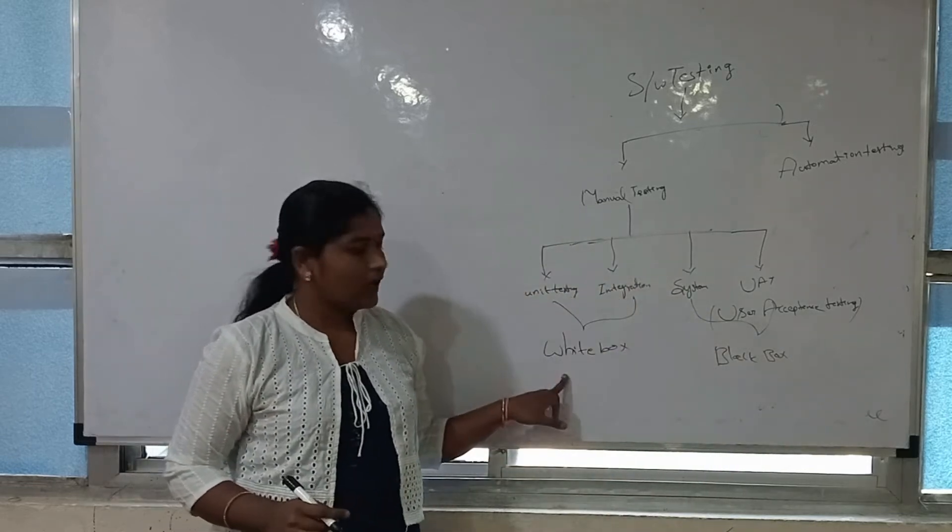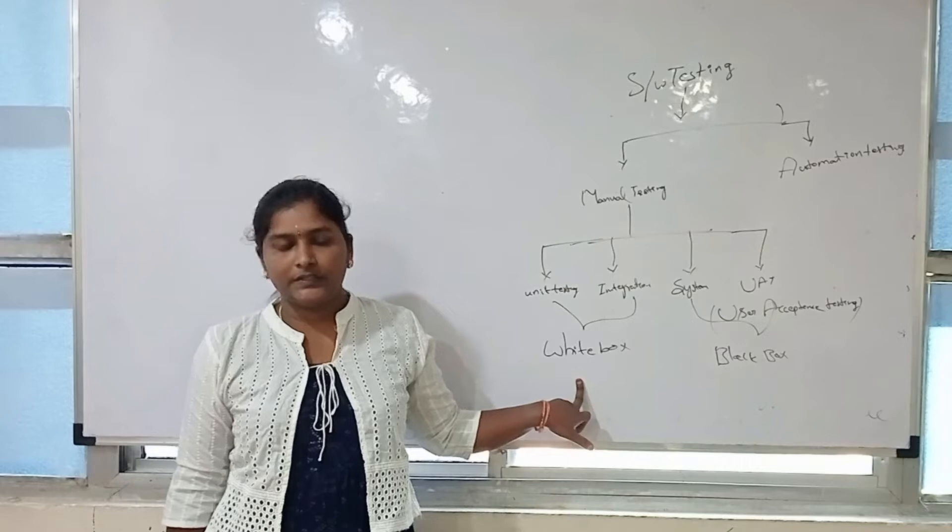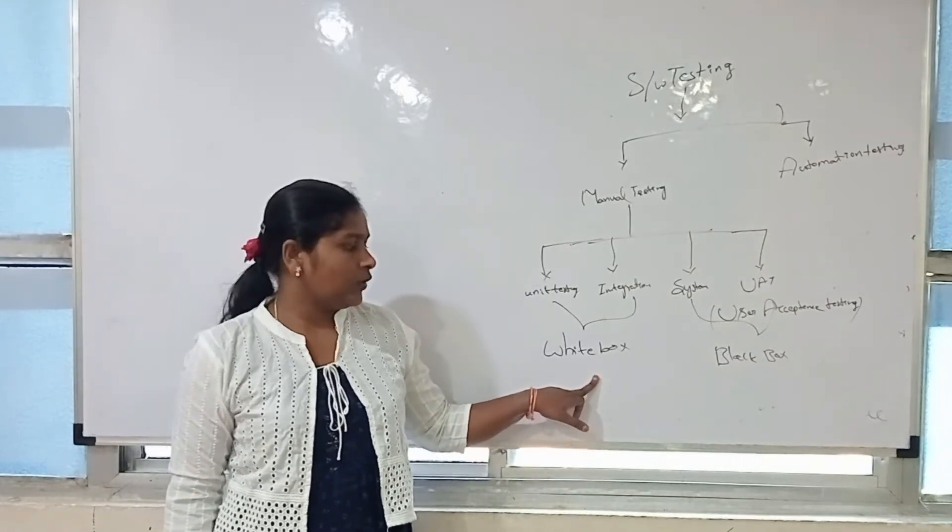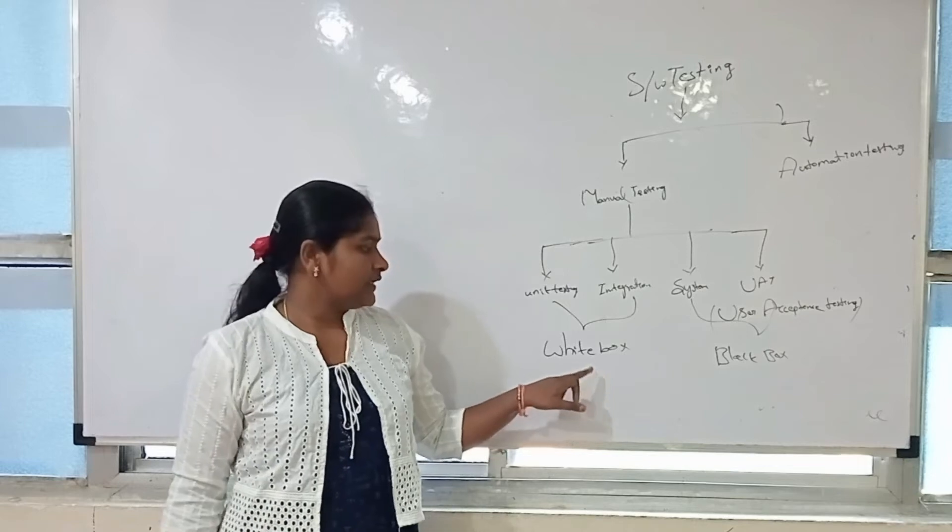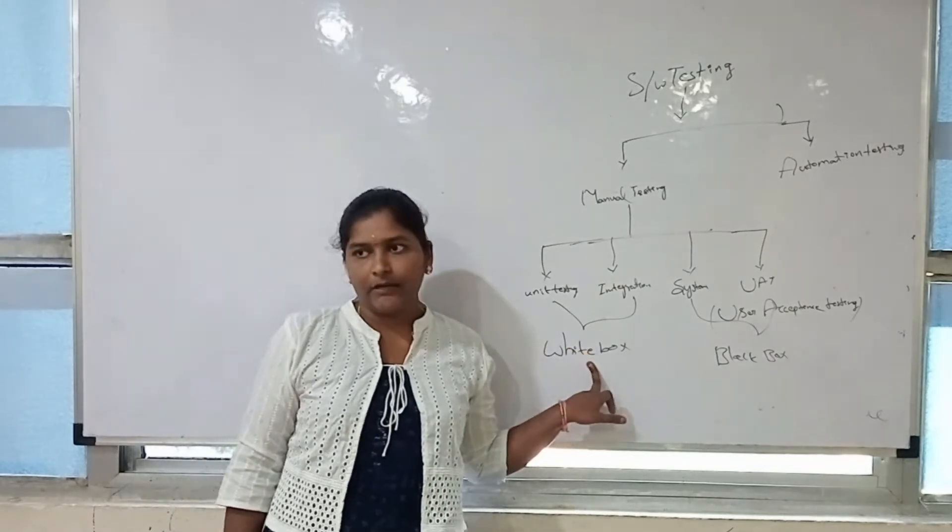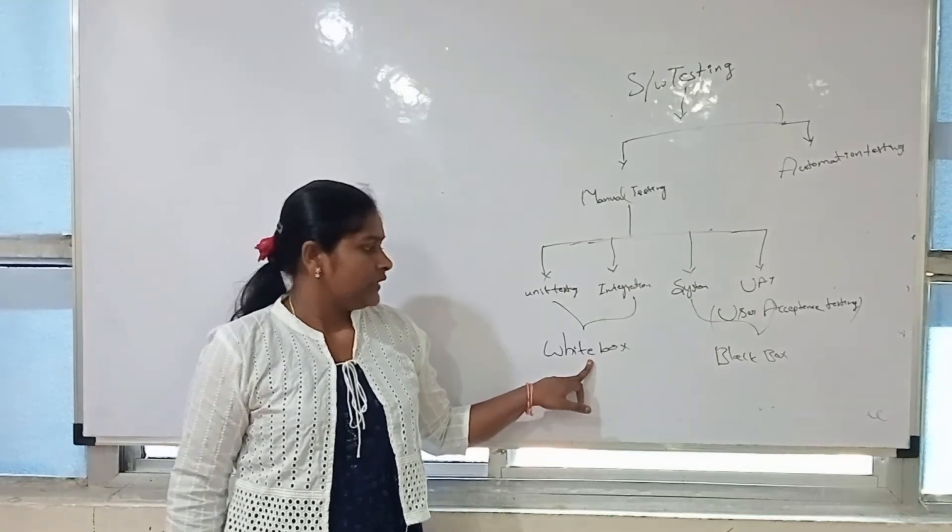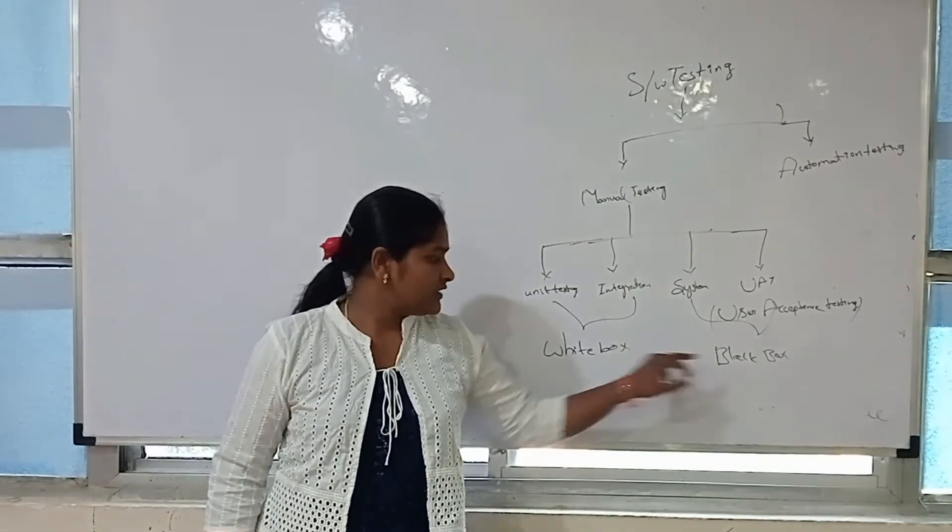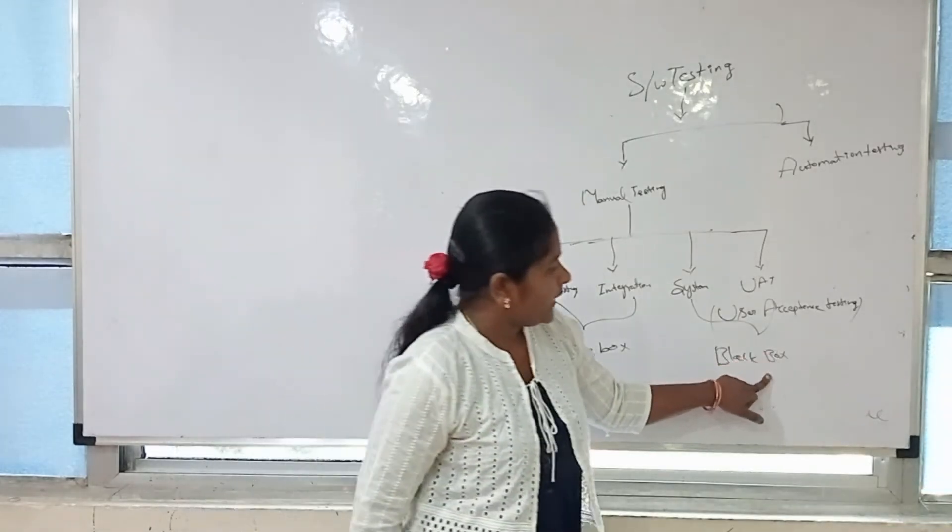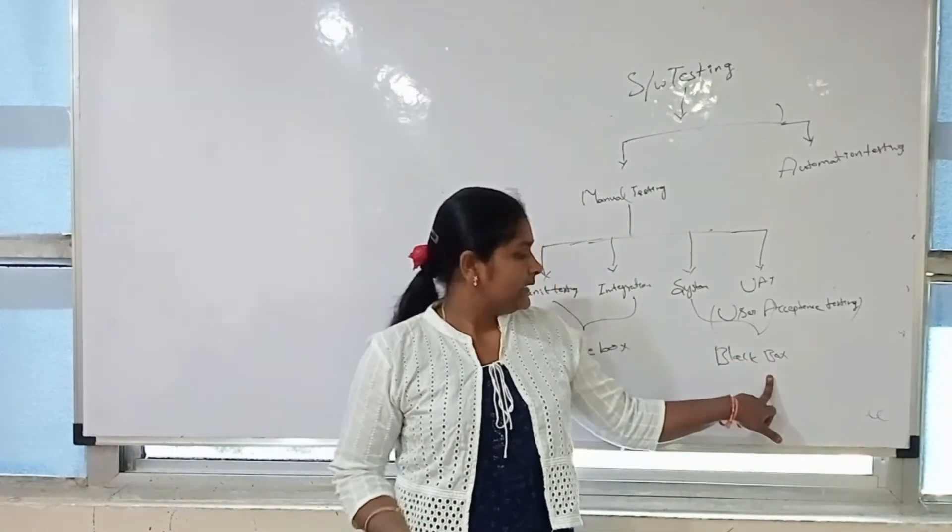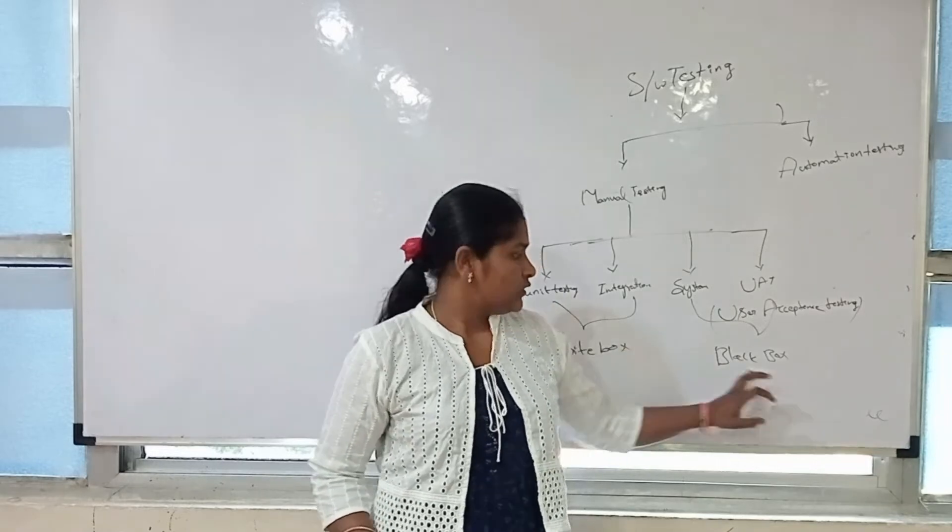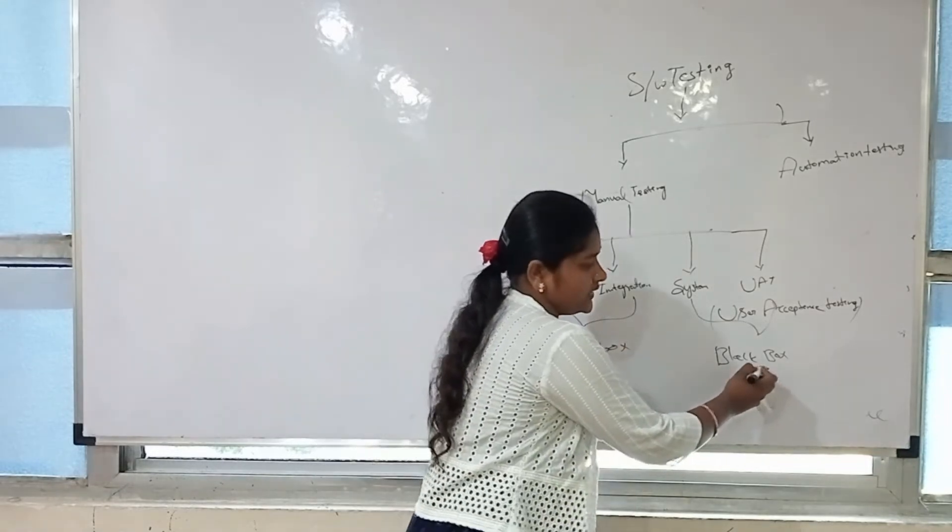First, we have white box testing. In white box testing, the developer develops the code and tests it line by line. So that's why we are calling it white box testing. In white box testing, the developer only can see the code. The tester cannot see that code. In black box testing, the tester tests the functionalities only. They don't know what is the code. So that's why it is called black box testing.